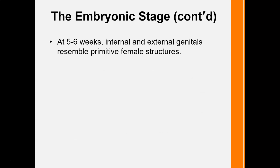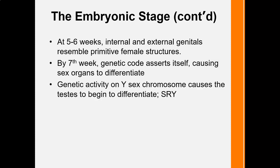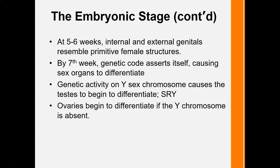At about five to six weeks, internal and external genitals look exactly the same — on ultrasound you might think it's a primitive female structure, but it may not be. By the seventh week, whatever genetic code was given to the offspring begins to assert itself. Genetic activity on the Y chromosome — specifically a gene called SRY — will cause the testes to differentiate. If there is no Y, ovaries will begin to differentiate. If the Y doesn't produce SRY, a female is created.